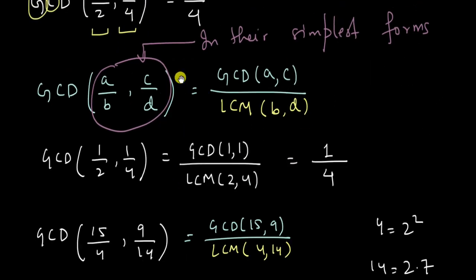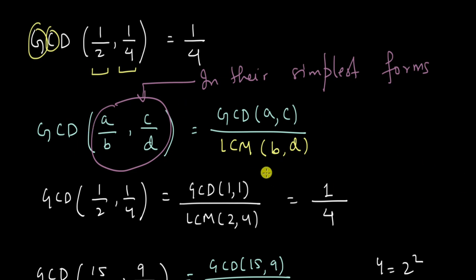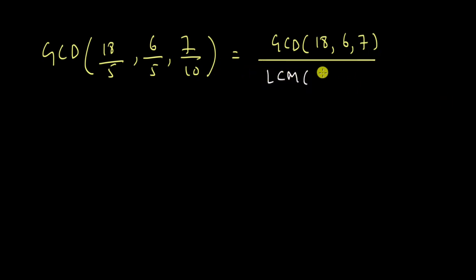Now finally, I also want to mention that this trick works for even more than two fractions. So let's get this away. And if we want to find the GCD of three fractions, let's say 18 by 5, 6 by 5 and 7 by 10. Then this will be equal to the GCD of 18, 6 and 7 divided by the LCM of 5, 5 and 10.